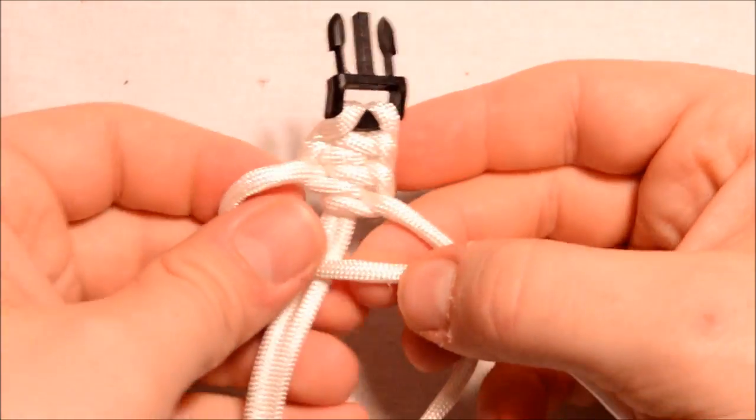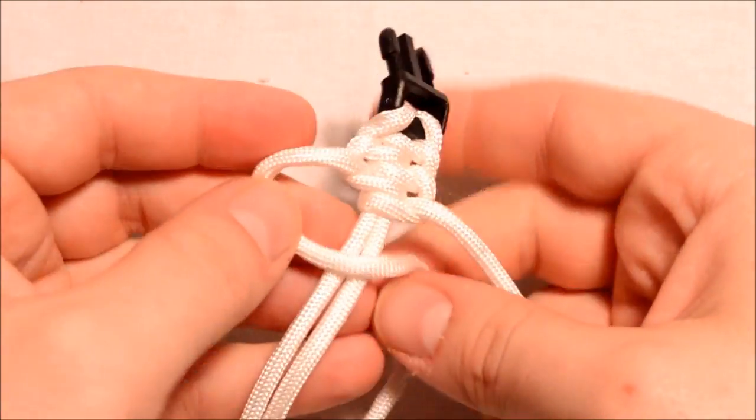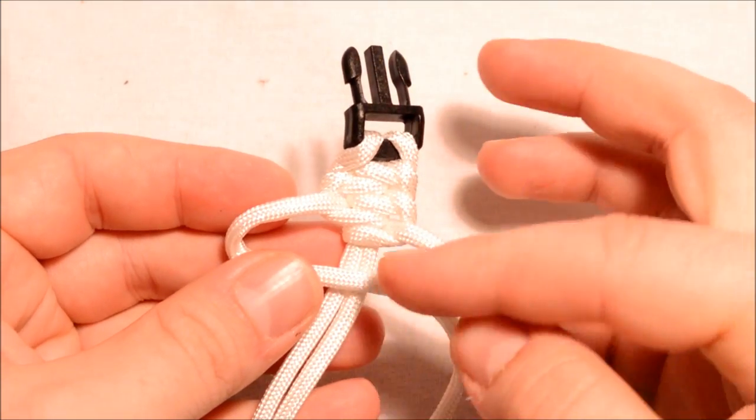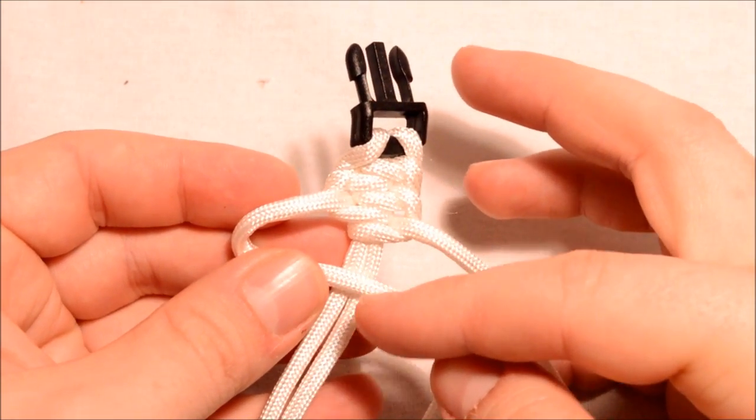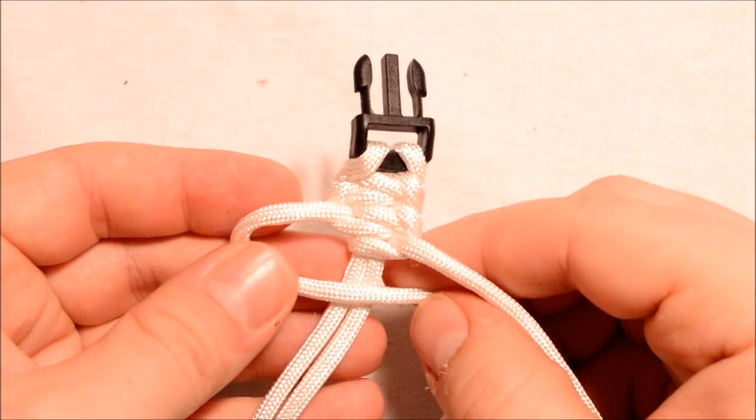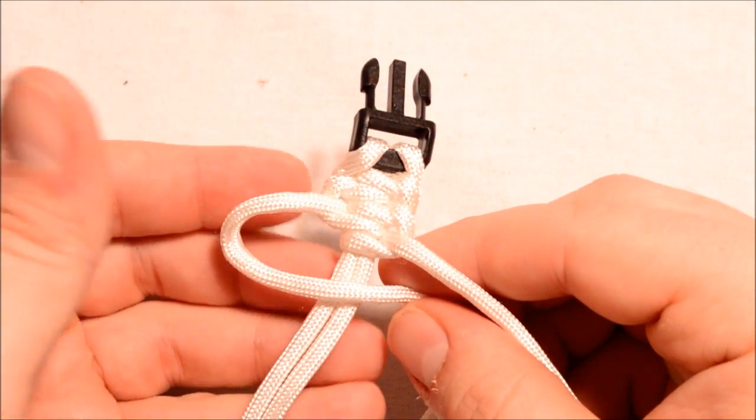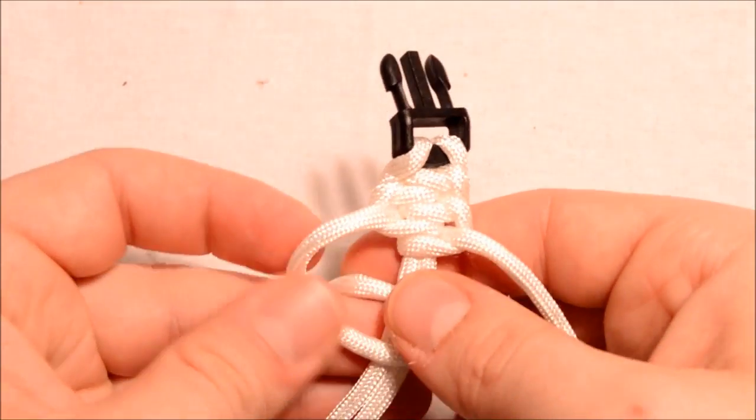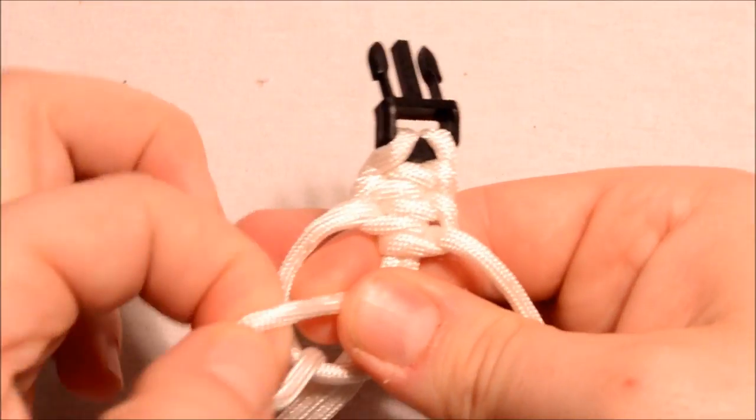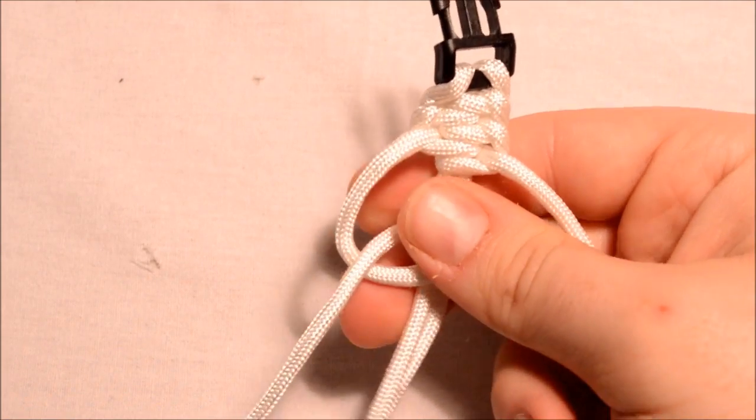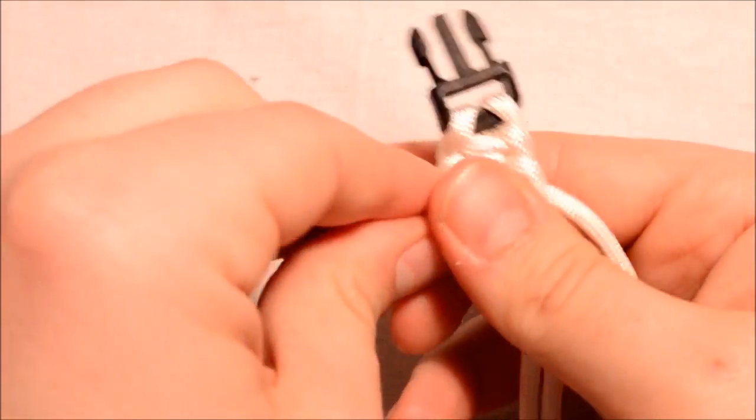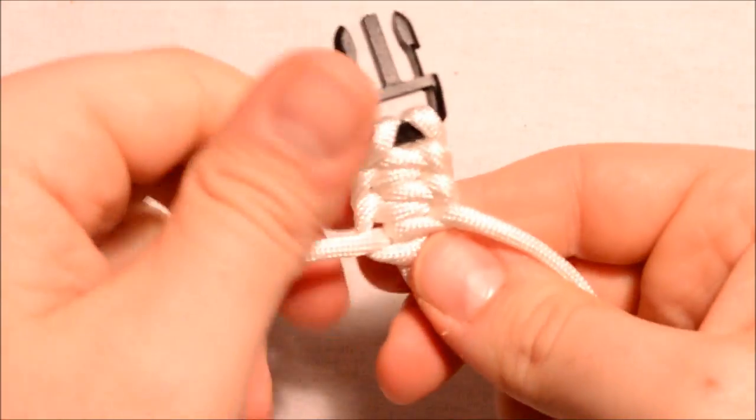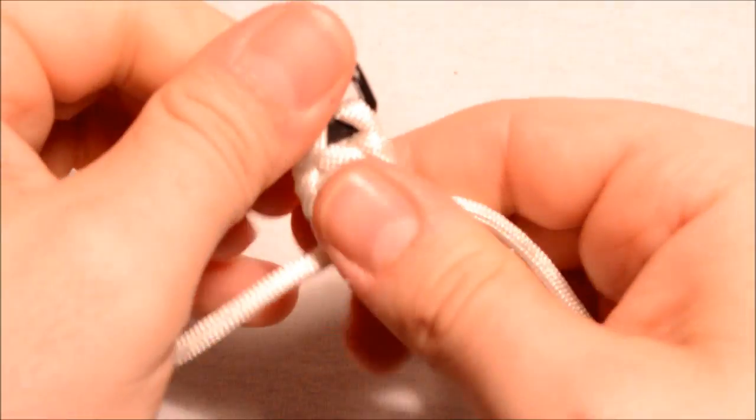Here we go, and I'll do one more here. This is pretty easy, it just takes a little time because it's one pass, you're just going down a little, a little, a little. So create the loop, take it over the top, around the back, poke it through the hole, and pull all your excess through.